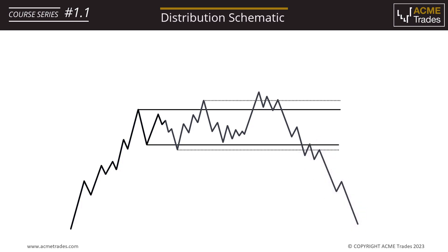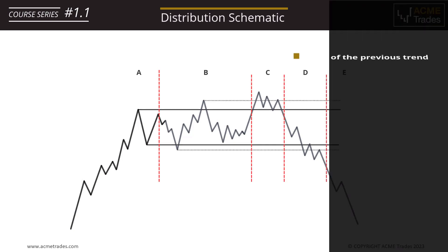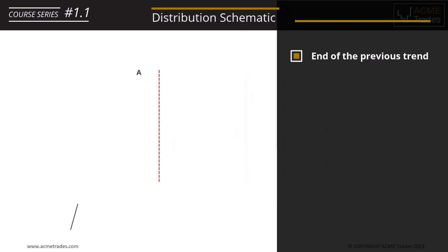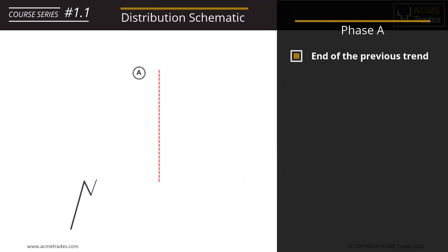Let's mark these phases: Phase A, Phase B, Phase C, Phase D, into Phase E. Phase A within distribution is the end of the prior trend — in this case an uptrend which was markup, phase two. And it was a selling climax via accumulation.